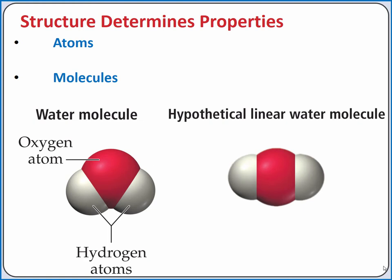The geometry of water is called bent, making it a polar molecule. We'll learn more about this later, but it gives it particular properties. If water had a linear geometry, like carbon dioxide, which is dry ice, it might have a much lower boiling point and could possibly even be a gas at room temperature. So the structure of water affects the boiling point, which is a property of water.